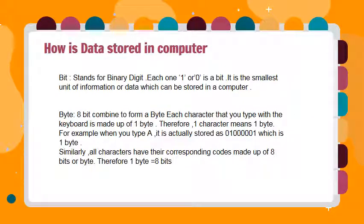We call them bit and byte. Bit stands for binary digit. Each one or zero is a bit. It is the smallest unit of information or data which can be stored on a computer. 8 bits combine to form a byte. Each character that you type with a keyboard is made up of one byte. Therefore, one character means one byte. For example, when you type A, it is actually stored as 0, 1, 0, 0, 0, 0, 0, 1 — which is one byte. All characters have their corresponding codes made up of 8 bits or one byte. Therefore, one byte is equal to 8 bits.